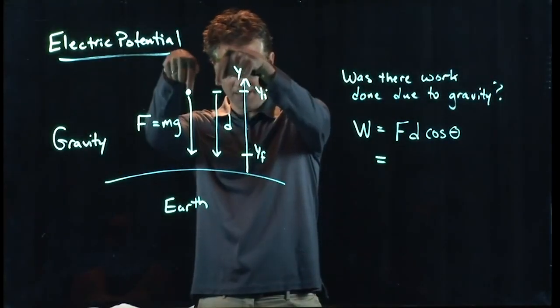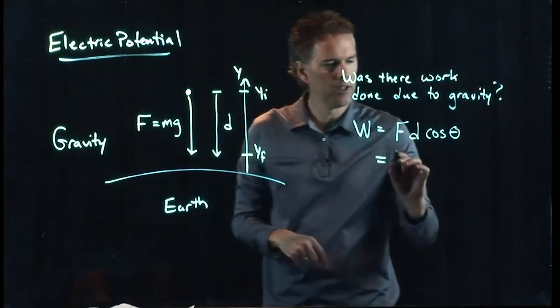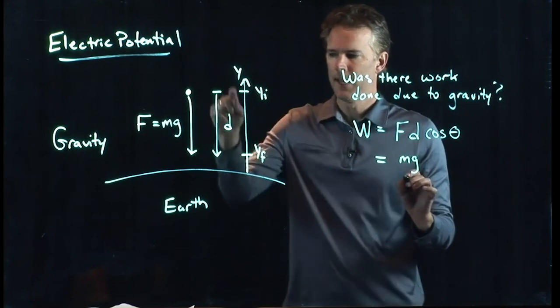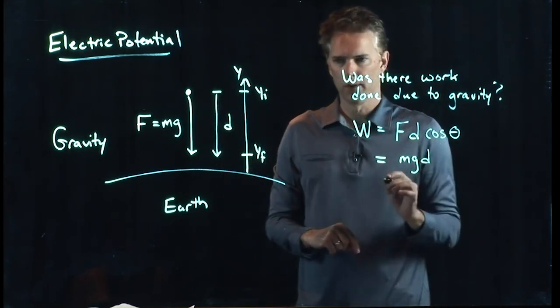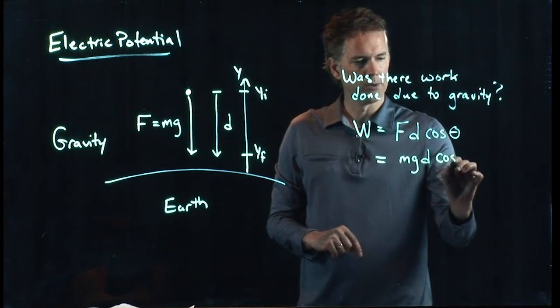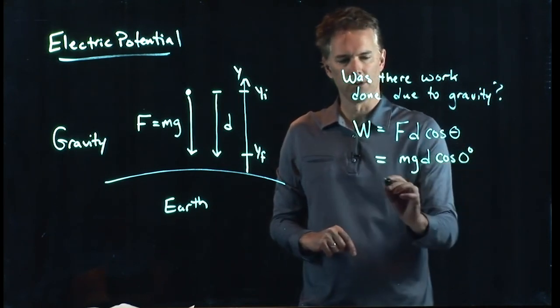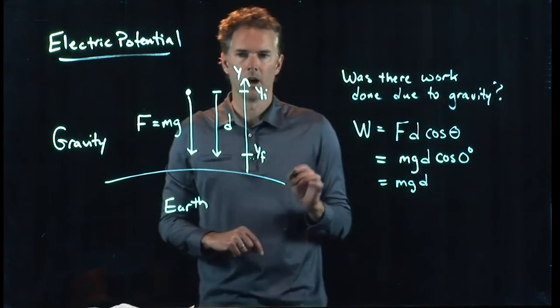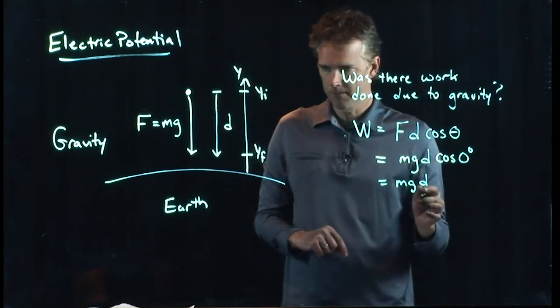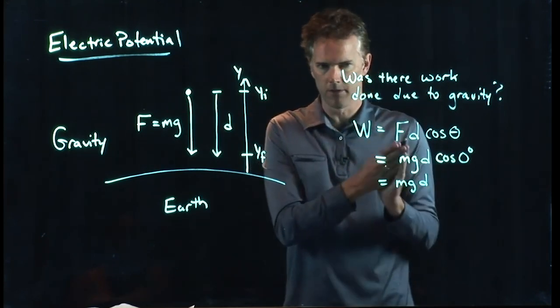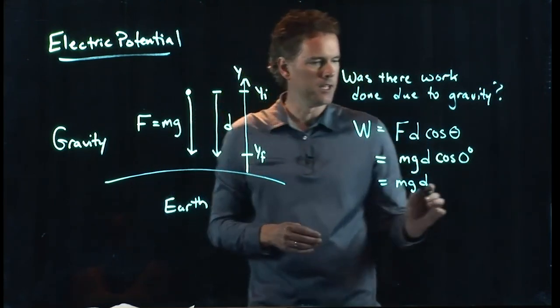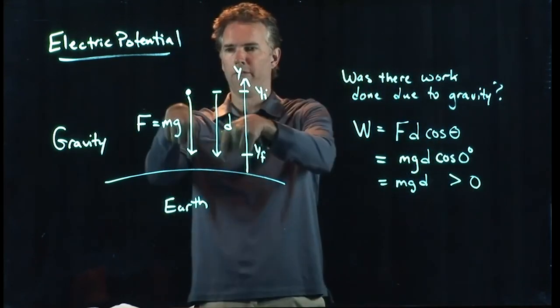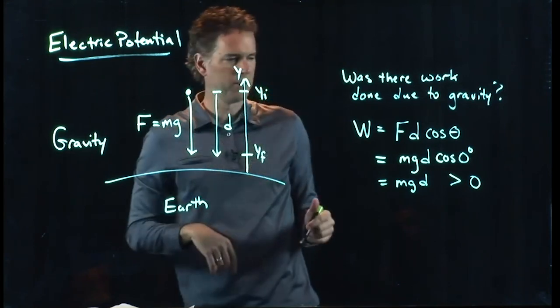F was down, the displacement D was also down, and so we know exactly what this becomes. It becomes mg for our force, D going down for the displacement. The angle between those is 0 degrees, cosine of 0 degrees is 1, and so we get a work of M times G times D. This is the work that gravity did. It is a number that is positive, greater than 0 because the force and the displacement are in the same direction.